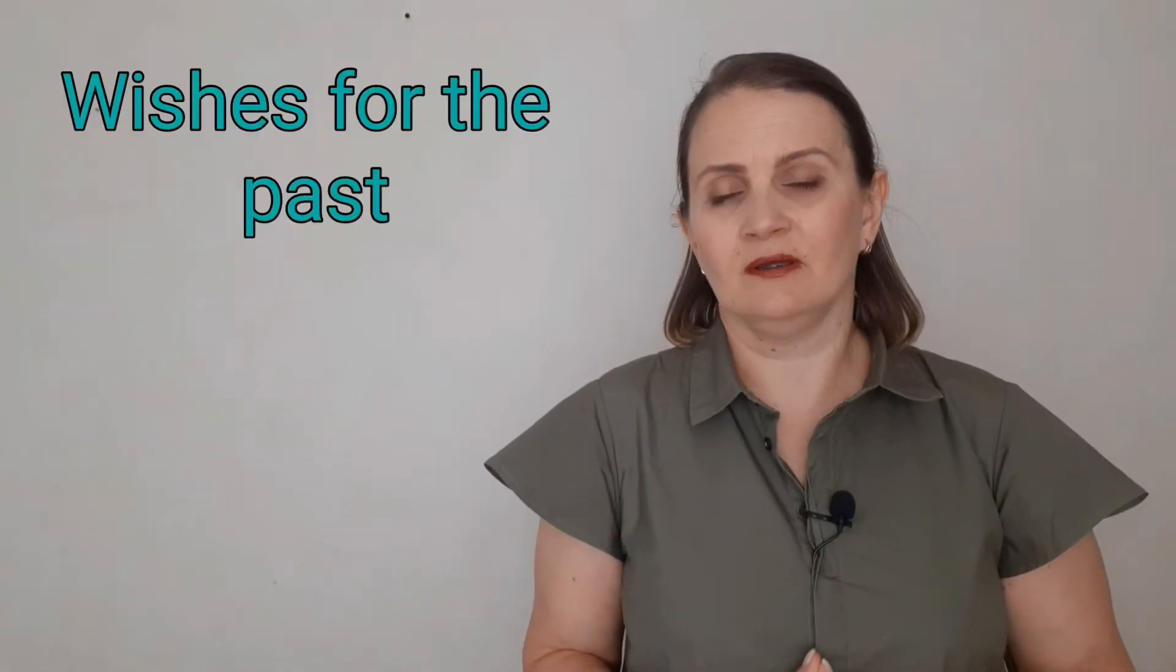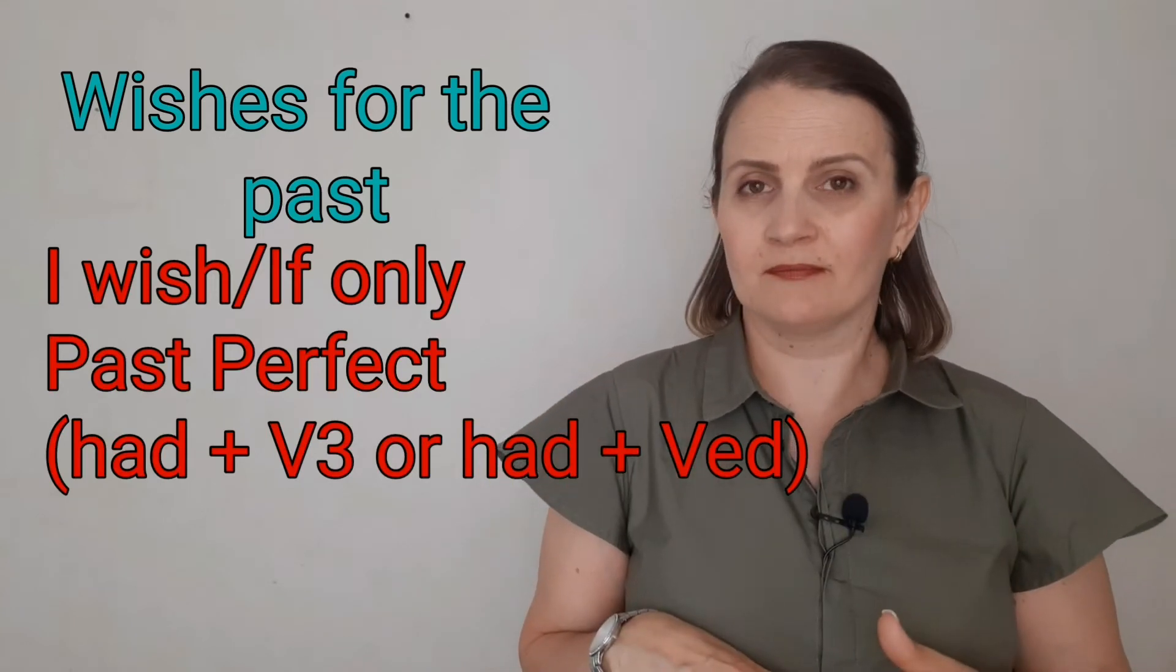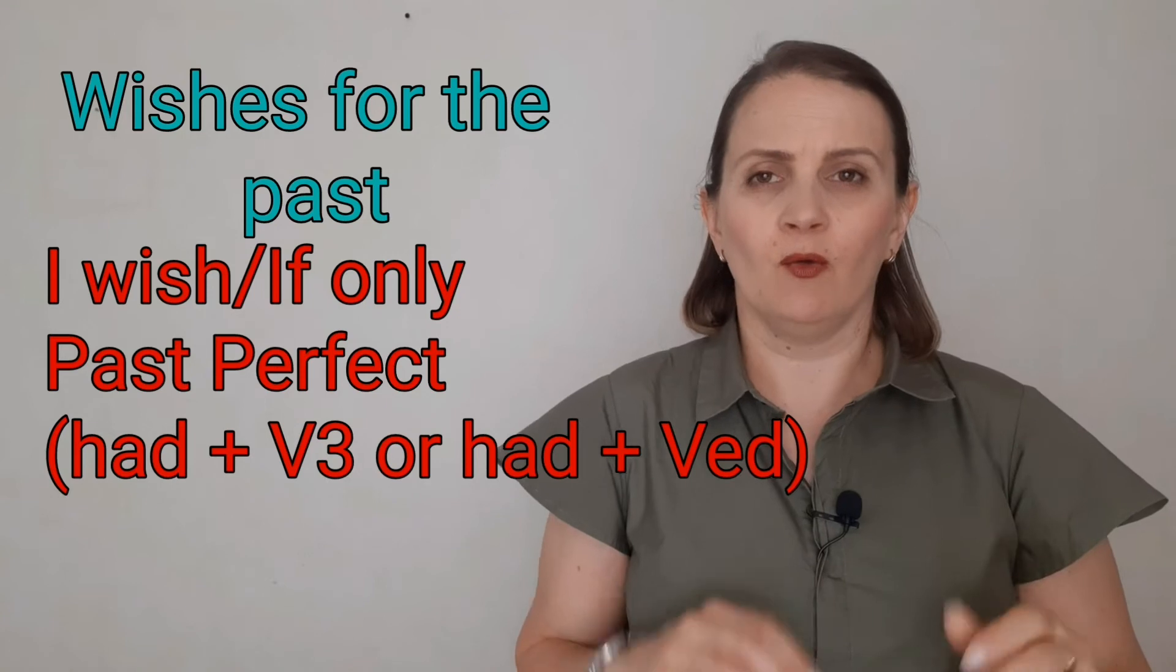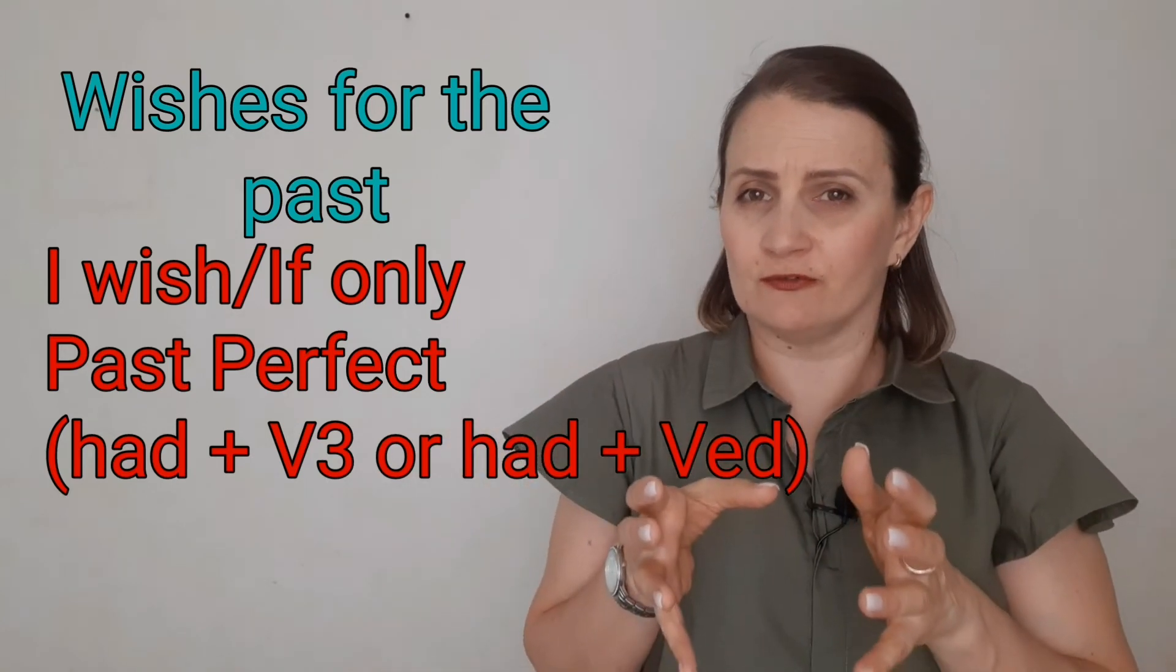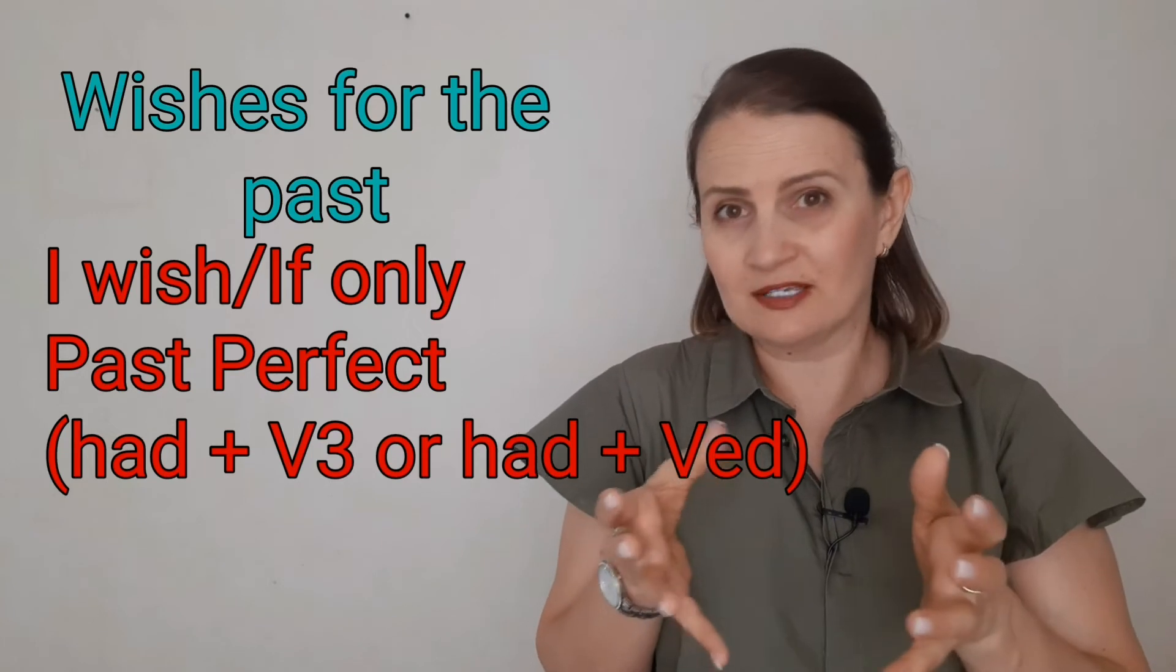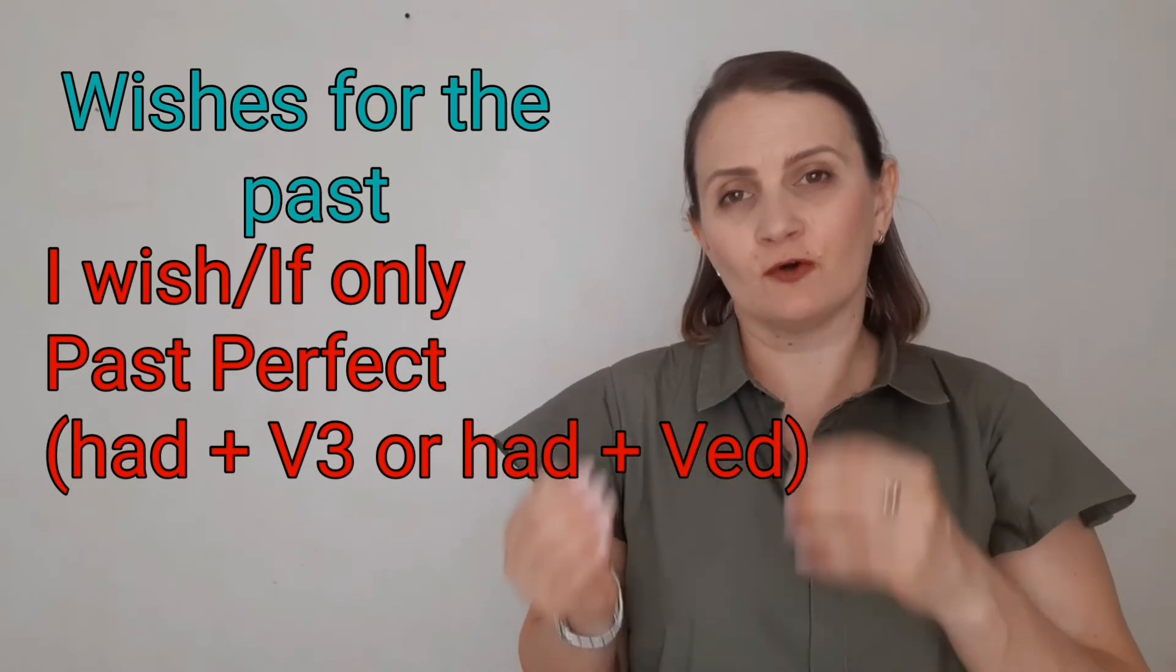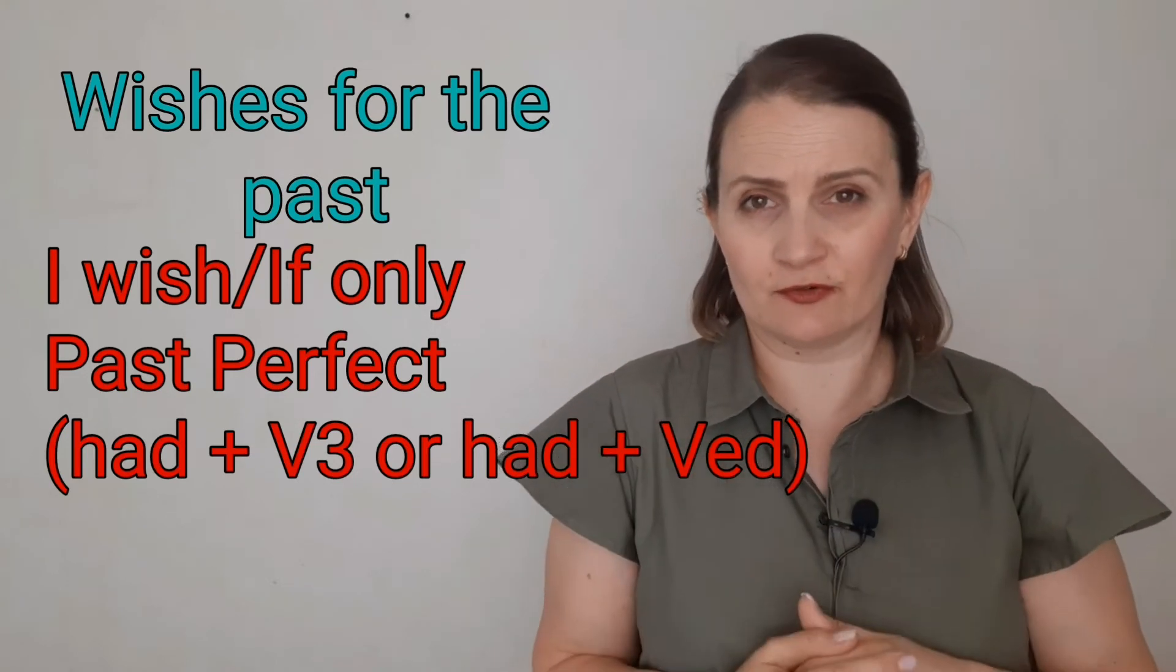Wishes for the past are formed with wish or if only and the past perfect form of the verbs, or had and the third form of the verb, verb 3 as we call it if it's an irregular verb, or verb with the ed ending if it's a regular verb.